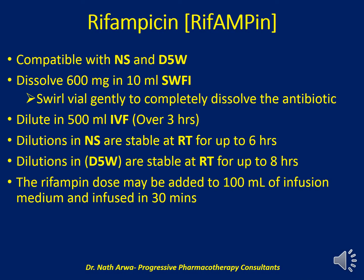Rifampicin is compatible with both 5% dextrose in water and normal saline. The 600 mg vial should be dissolved using 10 ml of sterile water for injection — add the water and swirl gently to completely dissolve. The resultant solution can then be further diluted in 500 ml of IV fluid of choice, and after homogenizing, infused over 3 hours. Dilutions in normal saline are stable for up to 6 hours at room temperature, while dilutions in 5% dextrose are stable for up to 8 hours. In fluid-restricted patients, rifampicin may be added to 100 ml and infused over 30 minutes.